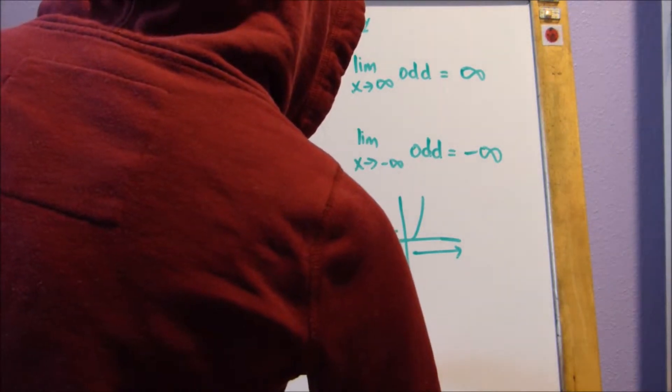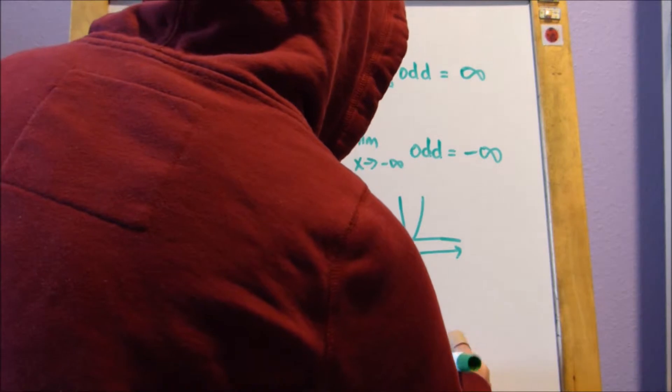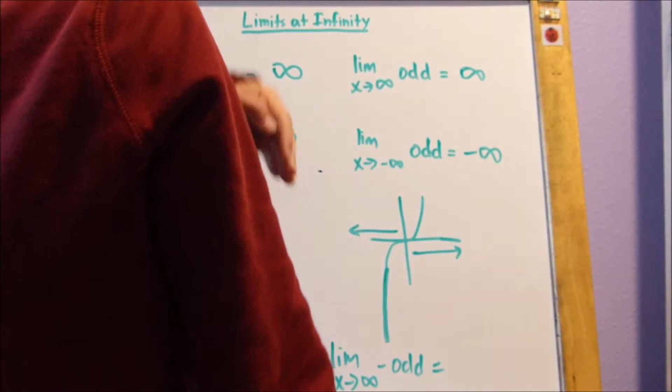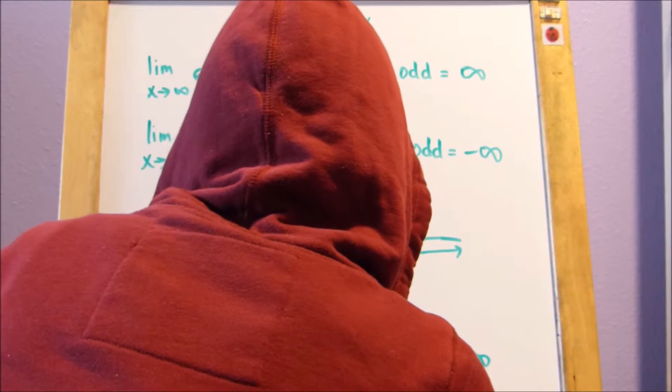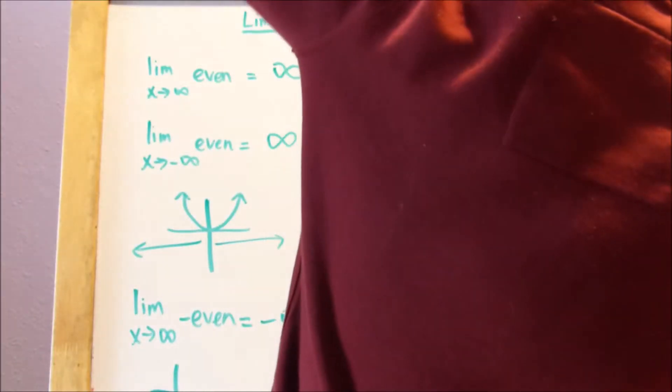If I were to ask about the limit as x approaches infinity of a negative odd function — our normal odd function has the positive x going to infinity and the negative x going to negative infinity. Now if we have a negative odd, everything shifts. Our negative x's are going to infinity and our positive x's are going to negative infinity. So as x approaches infinity, it's going to negative infinity. And as x approaches negative infinity of a negative odd function, the arm is pointed up, so it's going to be infinity.